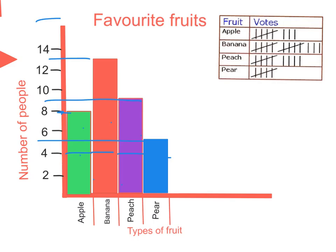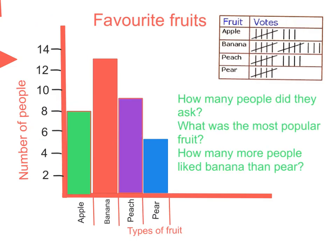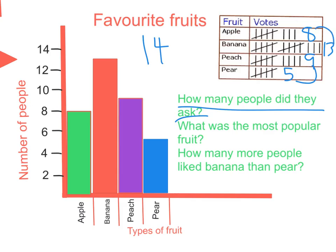Now that you've drawn your graph, what do you do with your data? You have to interpret it and understand what the graph means. One question might be: how many people were asked altogether? To figure that out, add up all the tally marks — eight, thirteen, nine, and five. Adding five and nine gives fourteen, and eight and thirteen gives twenty-one. Twenty-one plus fourteen equals thirty-five people asked.